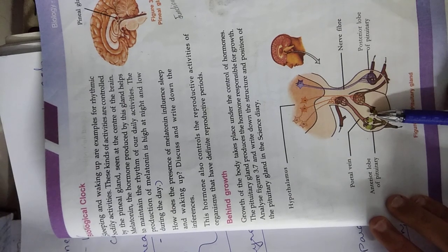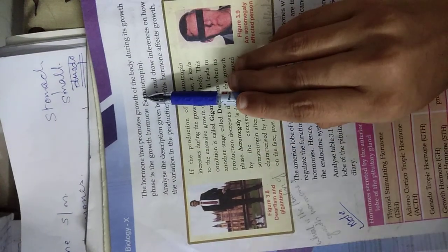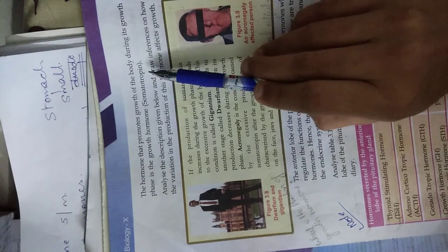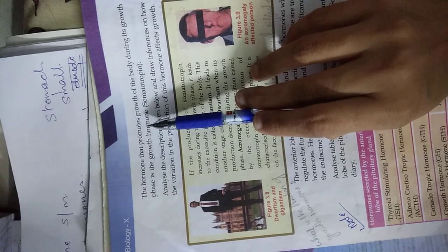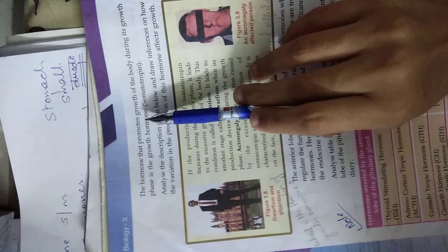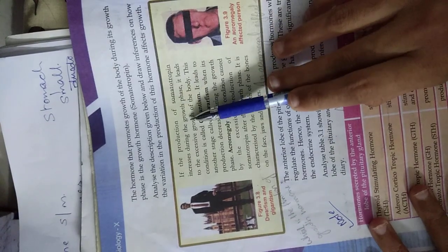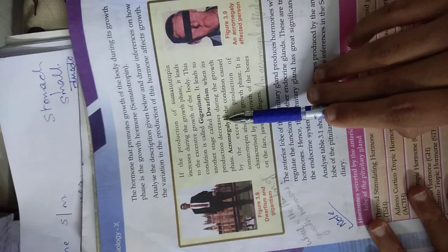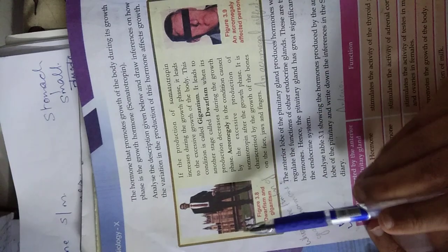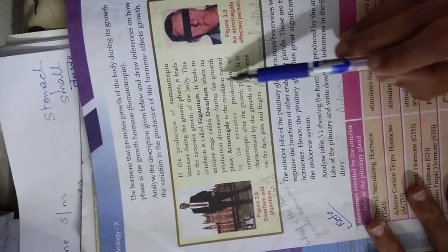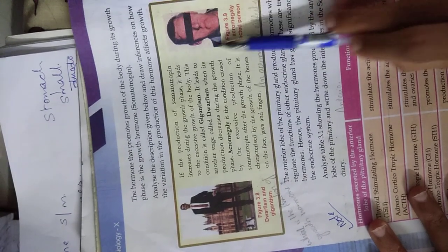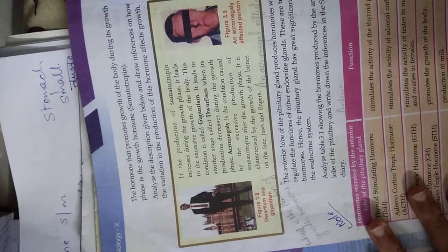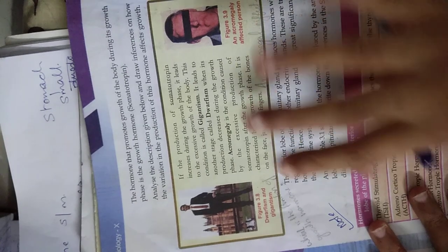The pituitary gland controls growth. One important hormone of the pituitary gland is somatotropin. Somatotropin controls the growth phase of the body. If somatotropin is in excess during the growth phase, it leads to a condition called gigantism. If somatotropin is less than normal, it leads to dwarfism. If excess somatotropin occurs after the growth phase, it causes acromegaly.